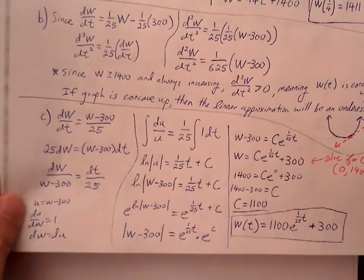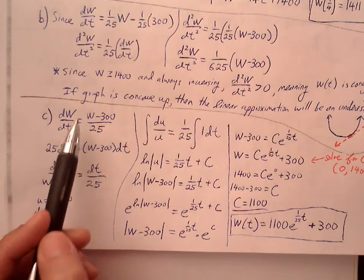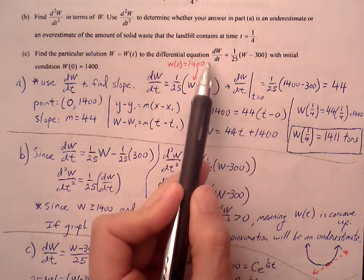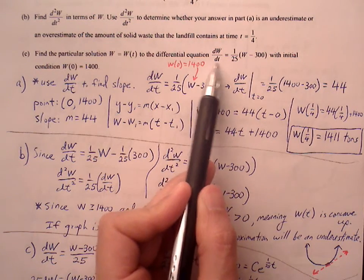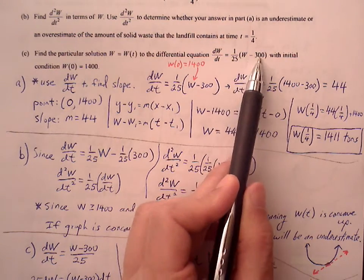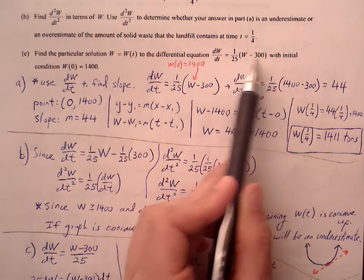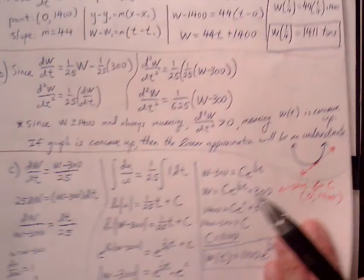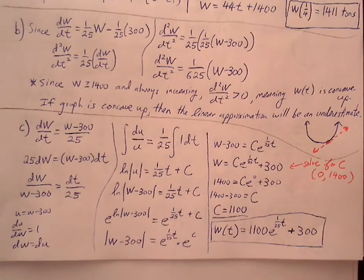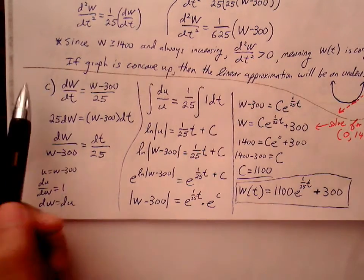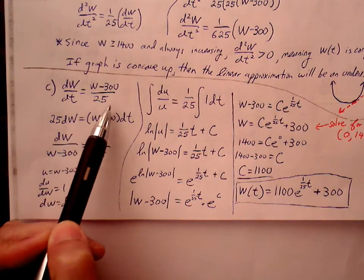Part C. We're going to be solving this differential equation. So we're going to find the particular solution given this equation. Rather than distributing the 1/25 through, I'm going to put this out, put this 25 under this parentheses, make it a fraction. I like to get two fractions going. It makes it easier to cross multiply and then to be able to separate as variables.